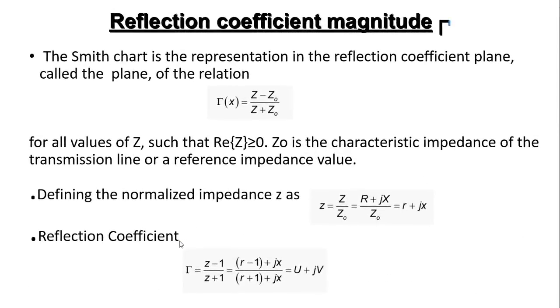Reflection coefficient magnitude: This method is the representation in the reflection coefficient plane. Magnitude of reflection coefficient equals Z minus Z naught divided by Z plus Z naught, for all values of Z such that Z is greater than or equal to zero. Z naught is the characteristic impedance of the transmission line or a reference impedance value.